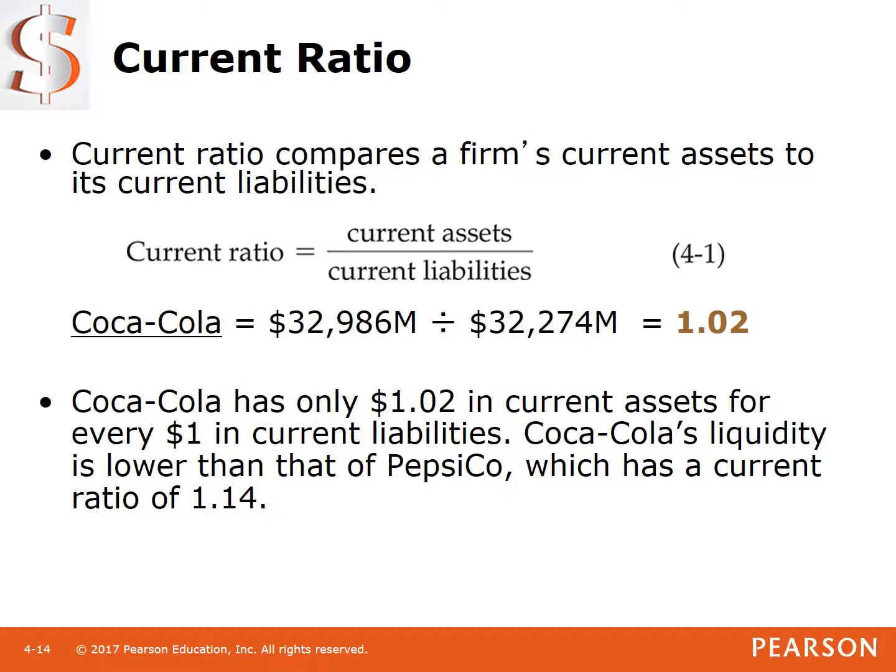Do they have enough in current assets to pay their current liabilities? Absolutely. But let's compare to a competitor, PepsiCo. PepsiCo's current ratio is 1.14. So Coca-Cola is not doing as well managing its current assets to current liabilities — it's not as liquid as Pepsi.